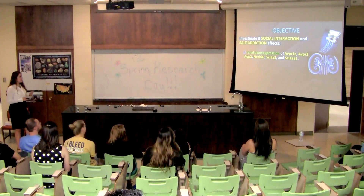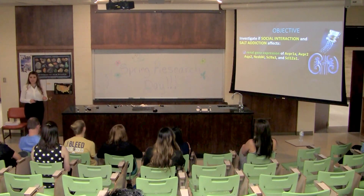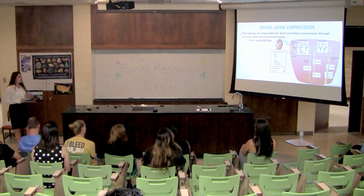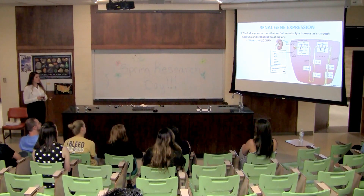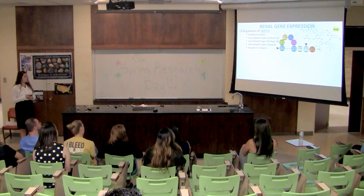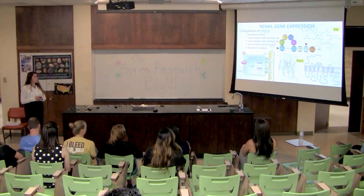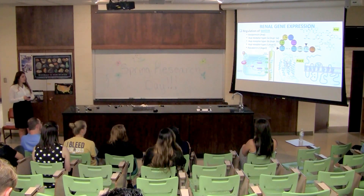The objective of my study was to investigate if both social interaction and salt addiction affect renal gene expression of AVPR1A, AVPR2, AQP2, NEDD4L, SLC9A3, and SLC12A1. I investigated the kidneys because they are responsible for fluid and electrolyte homeostasis through excretion and reabsorption of water and sodium. Water and sodium are reabsorbed at the proximal tubule, the distal tubule, and the collecting ducts, while only water is reabsorbed in the descending loop and only sodium in the ascending loop. Water is regulated through vasopressin and its three receptors—type 1A, type 1B, and type 2—as well as through aquaporin 2 (AQP2). Our main focus is AVPR2. When rats repeatedly undergo WDPR, they show an increase in AVP, which binds to receptor type 2, causing the Gs protein to bind to adenylyl cyclase, causing cyclic AMP to stimulate protein kinase A, which then causes exocytosis of aquaporin 2 to allow water to be reabsorbed.